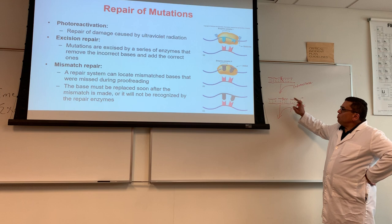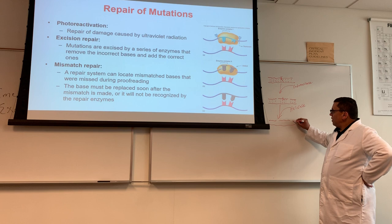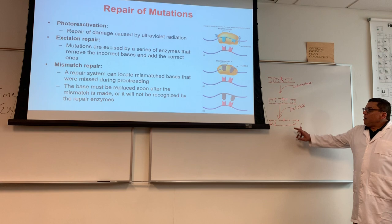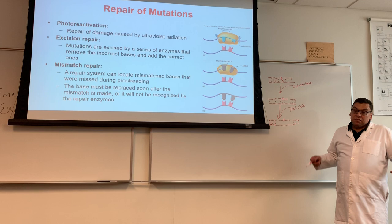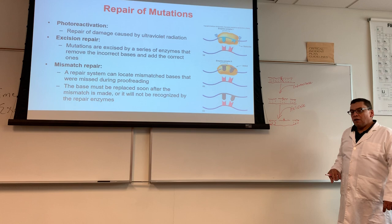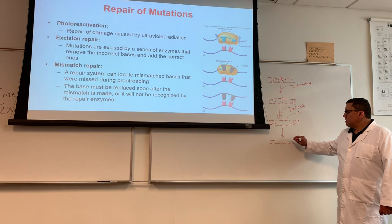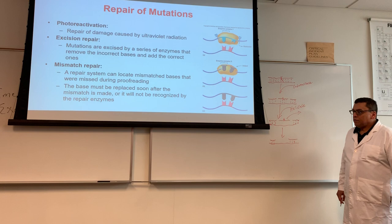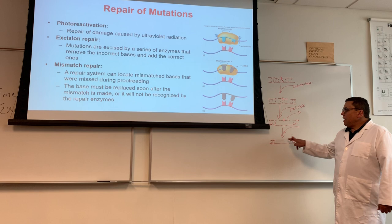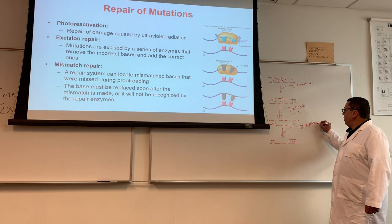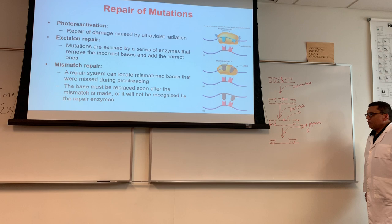Which enzyme from DNA replication unzips the DNA by breaking hydrogen bonds? Helicase. So helicase comes in and removes the hydrogen bonds, and the mutation-containing piece falls out — nothing is holding it anymore, since the phosphodiester bonds were cleaved and the hydrogen bonds were removed. Then another enzyme comes in to fill that gap — DNA polymerase 1, not 3, watch out for that.